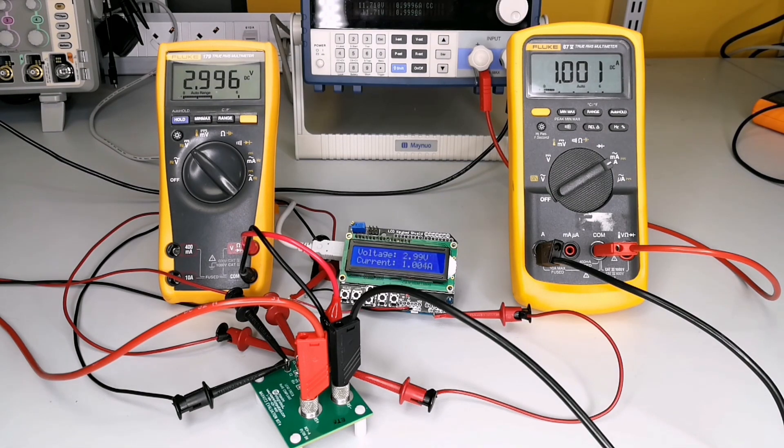This time the Arduino is converting the voltage into a digital value which is then displayed on the screen alongside the calculated value of current flowing through the shunt resistor. As you can see, the values on the screen match those shown on the respective multimeters.